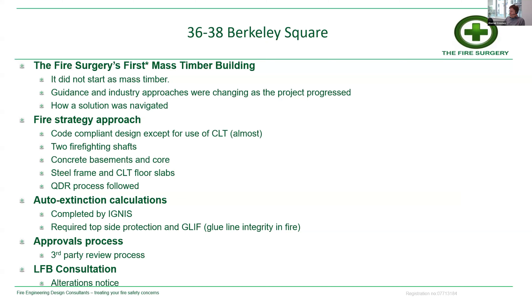We quickly realized Ignis could provide exactly what we were not able to provide, and between us we could fulfill the competency requirements. Giving an overview of the project: it was broadly code-compliant except for some minor deviations in all aspects except the use of CLT. It's an office building just under 30 metres in height with two firefighting shafts, concrete basements and core, a steel frame, and CLT floor slabs. We followed a QDR process with Ignis, building control, the client, and all relevant parties — though because of the timeline, that didn't start until Stage 4. On future projects you would look to start that much earlier.